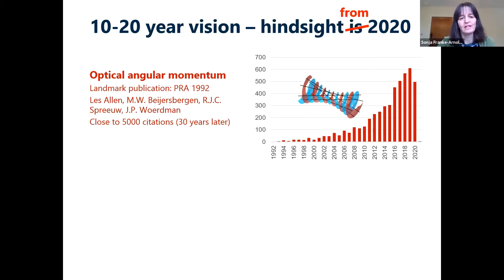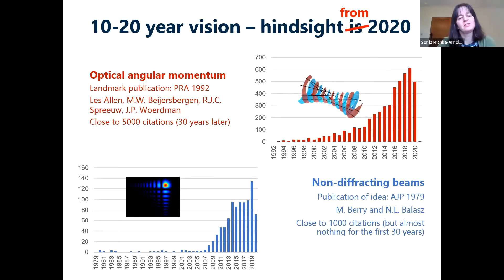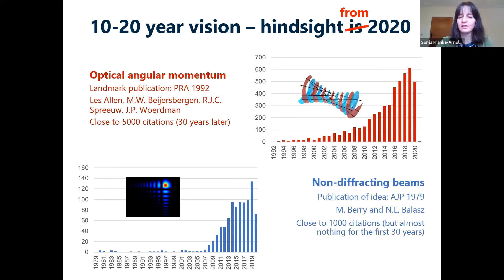Let's look at a different paper — non-diffracting beams, an idea published in 1979 by Michael Berry and a colleague. This is even more striking: for the first 30 years, pretty much nothing happened. It was just a curious little effect spotted for the Schrödinger equation, and nobody really noticed. Then all of a sudden the idea took off. Why did it take off so strongly from 2007? That was the first really experimental realization.